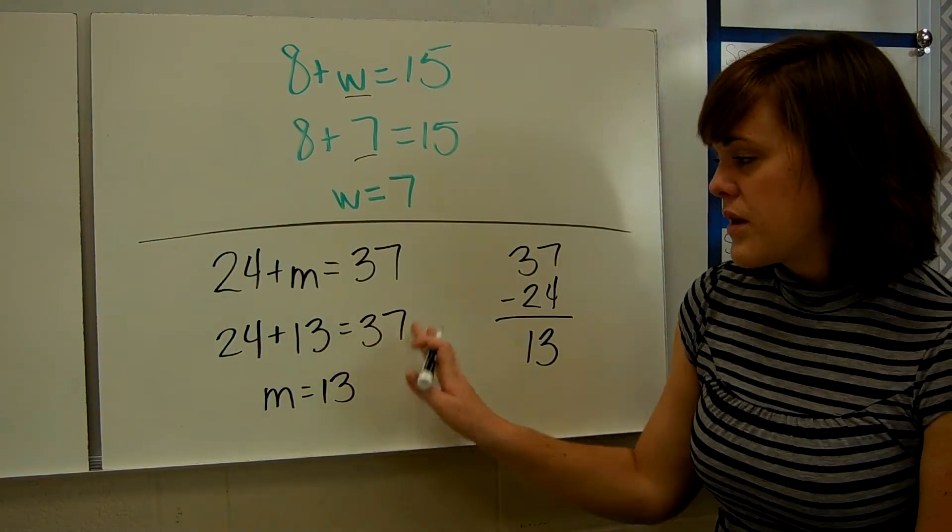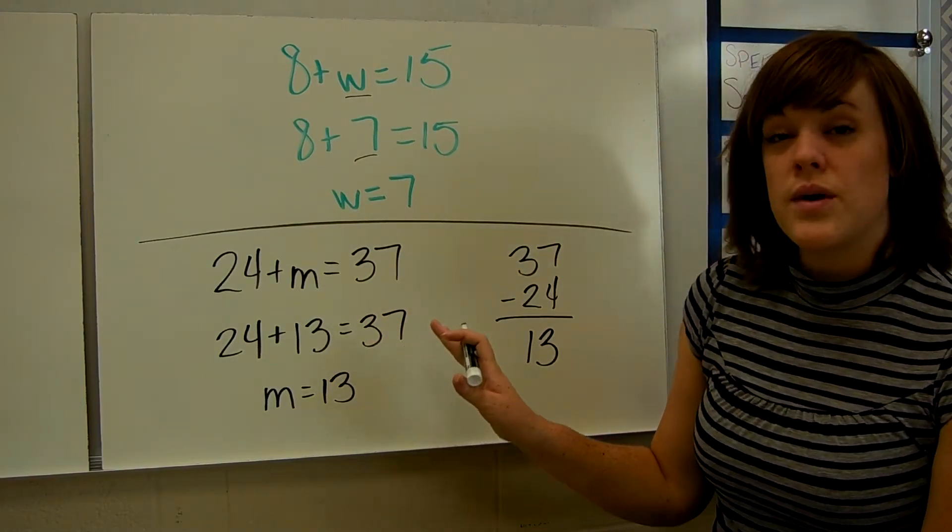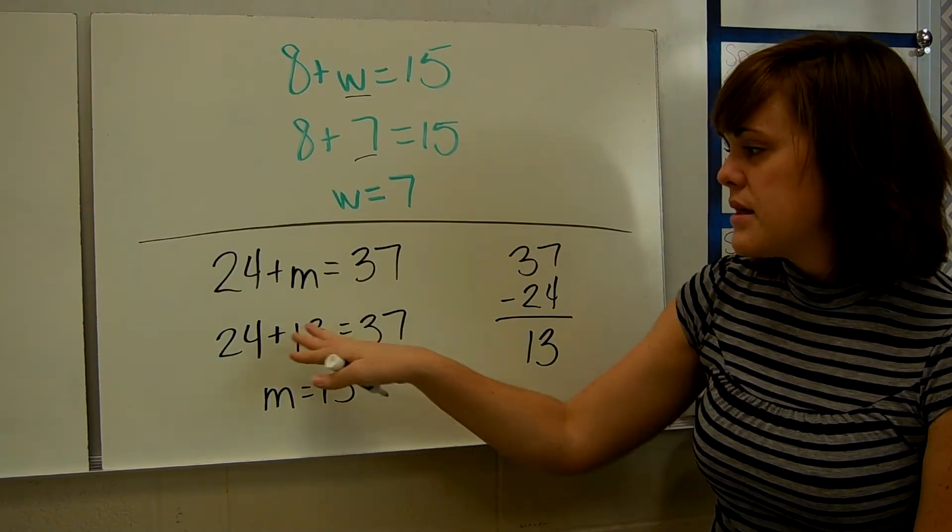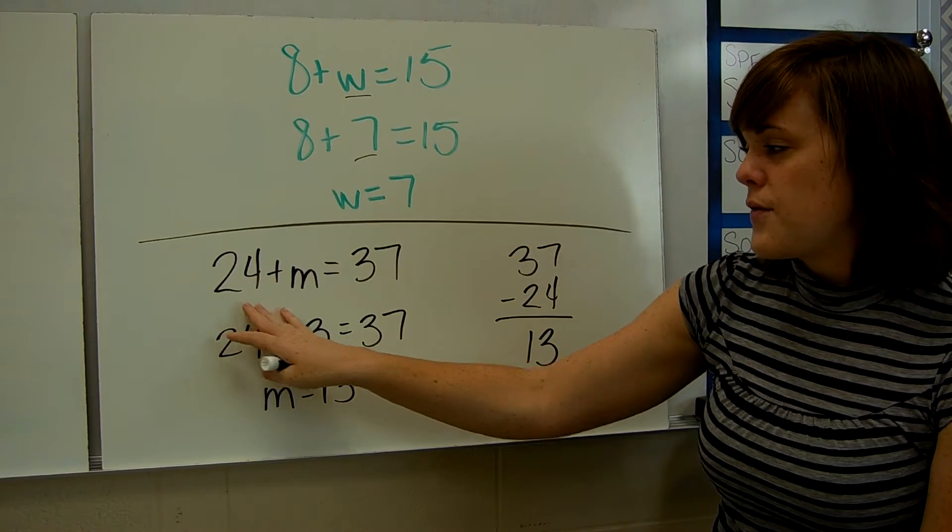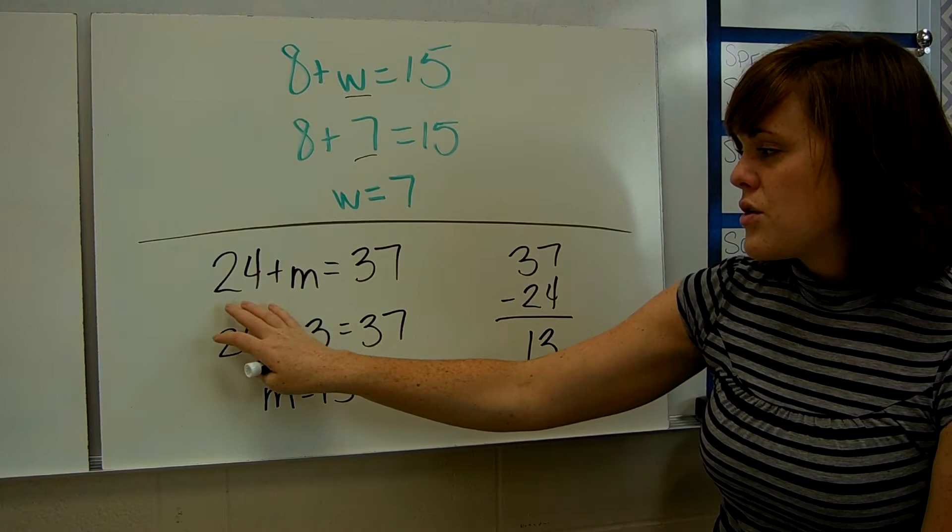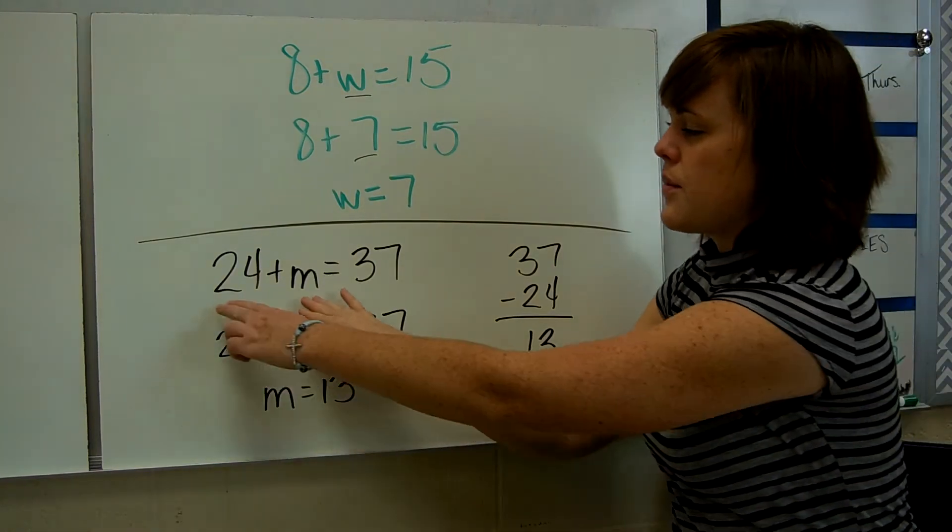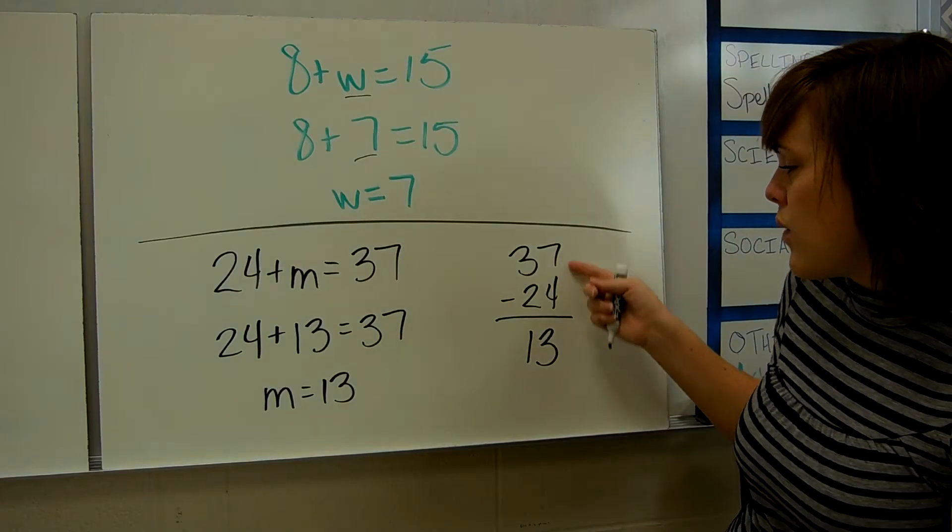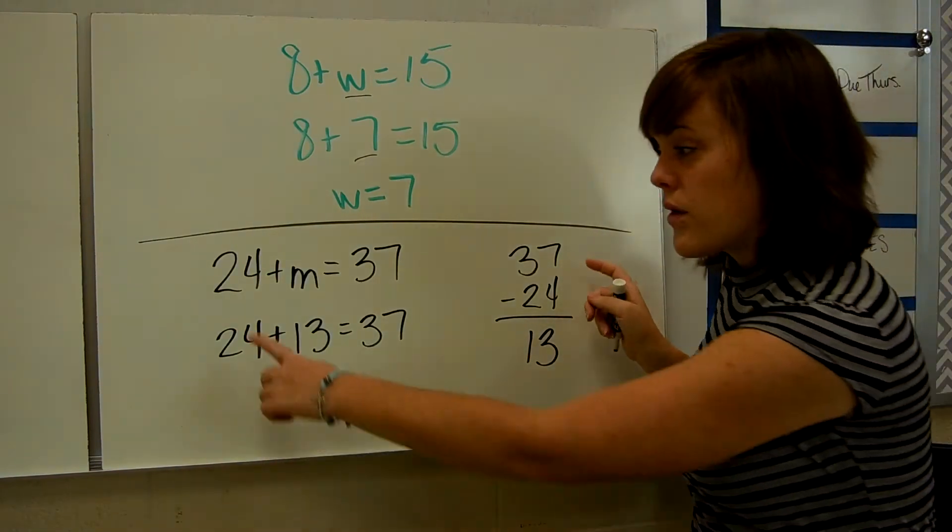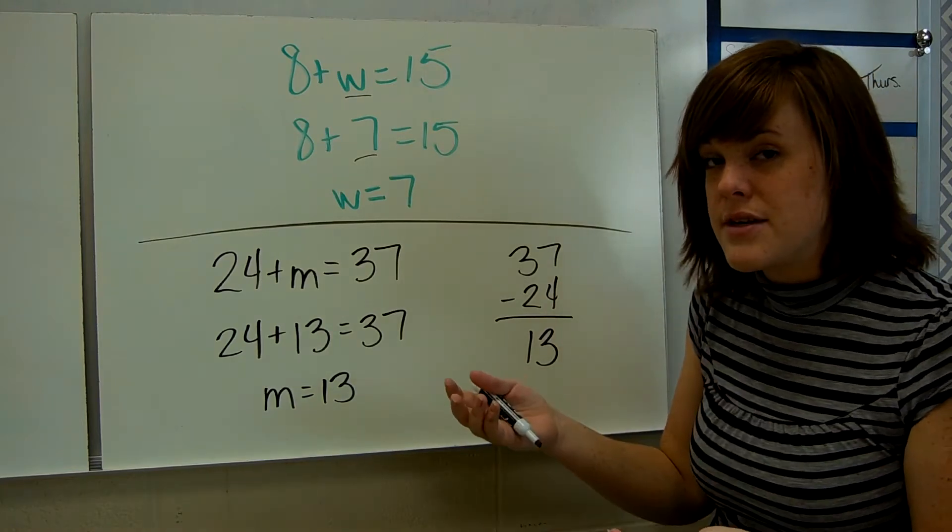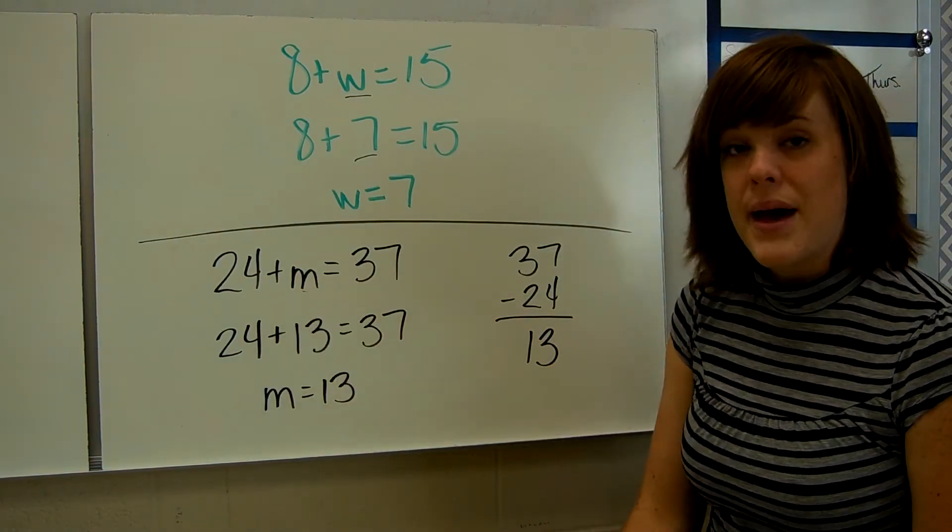Here's another one where the numbers are a little bit bigger, so it might be a little bit harder to do mental math with this. So let's say the problem is 24 plus M is 37. When I combine these two numbers, they have to equal 37. So if I take away 24, if I take that away from the 37, then what's left has to be my M.